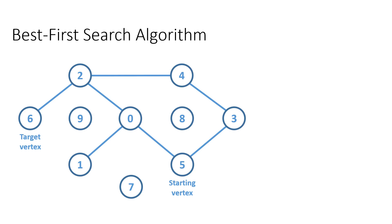Here our target vertex is traditionally marked as 6 on the left side and the starting vertex is marked as 5 on the right side.